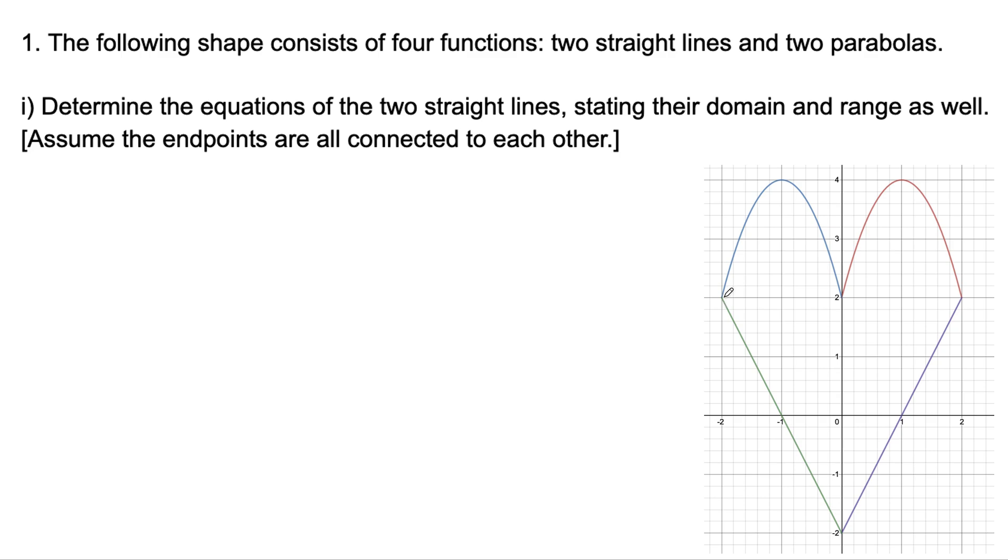We'll start with this straight line on the left. We can label these points as being (-2, 2) and this bottom one is (0, -2).